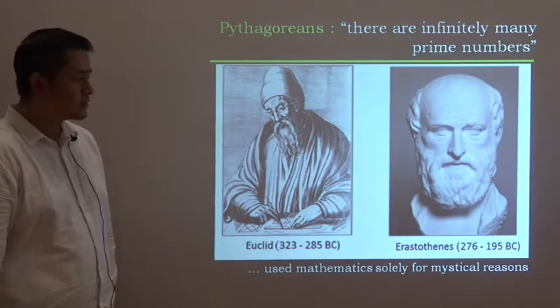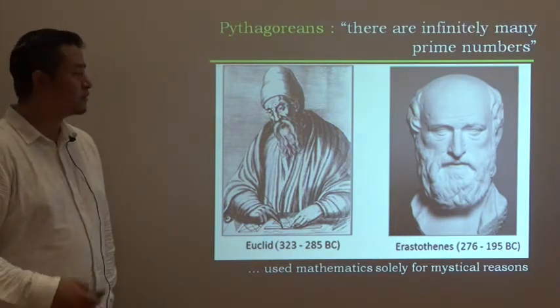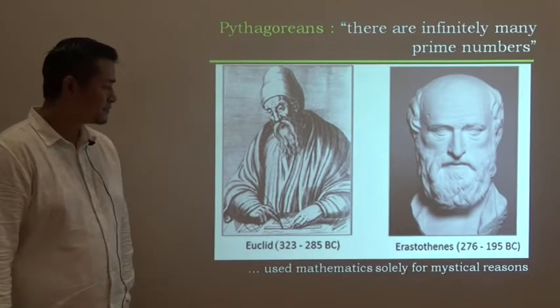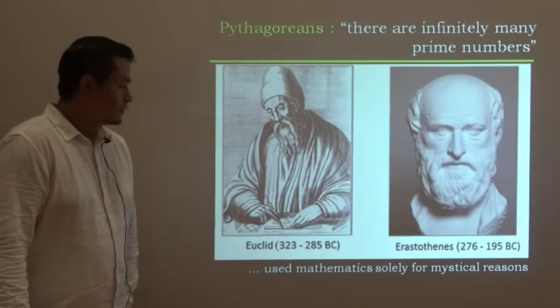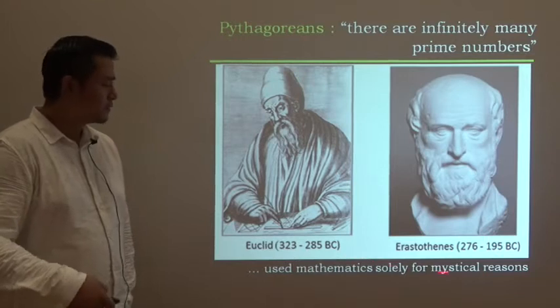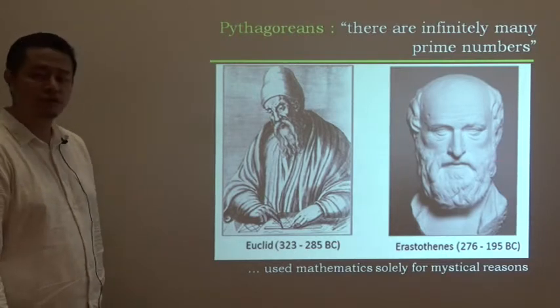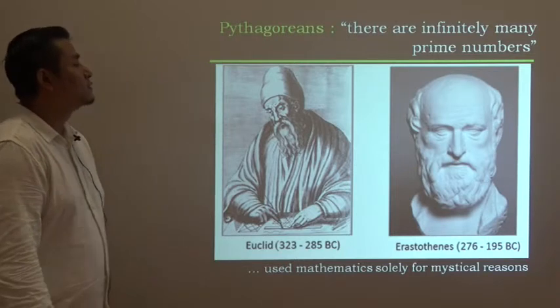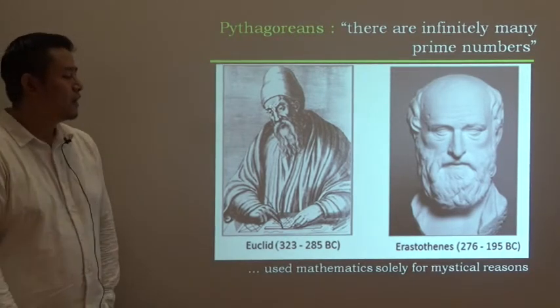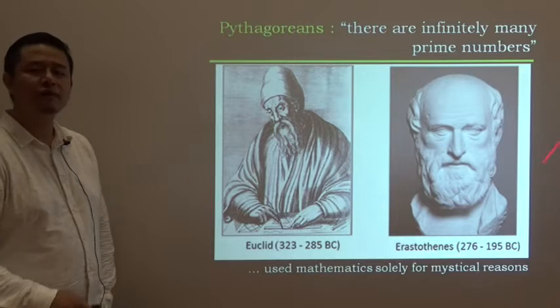There is a difference of around 300 years from the time of Pythagoras to Euclid and Eratosthenes. There were no proper written records during the 600th century BC, but we have certain documents approximately in the 3rd century BC. They came up with a strong statement: there are infinitely many prime numbers. Eratosthenes had also devised one scheme to find out prime numbers.